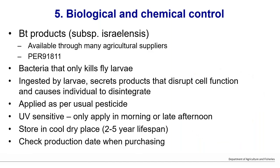BTi (Bacillus thuringiensis israelensis) is a bacteria — not a nematode — that must be ingested by the fungus gnat larvae. This subspecies only kills fly larvae and is also used in rivers for killing mosquito larvae. It's UV sensitive, so apply it in the morning or late afternoon. Get the dry formulation, check the production date when purchasing, and store it away from fluctuating temperatures and sunlight to preserve its lifespan.